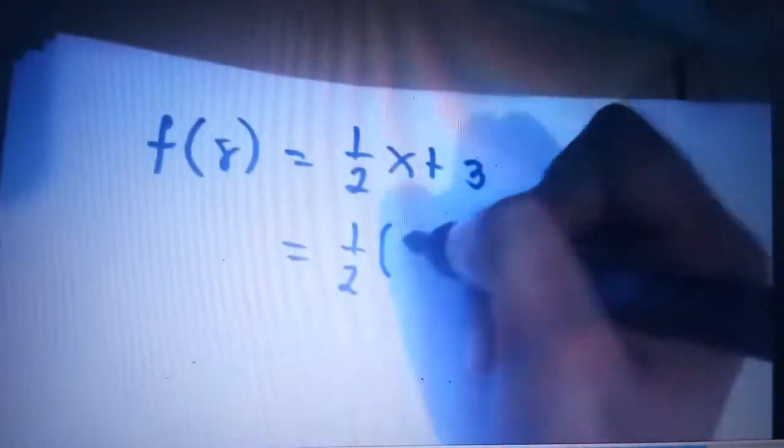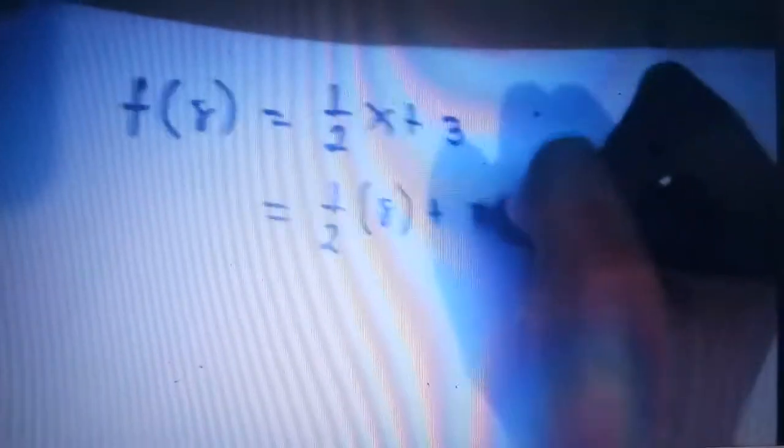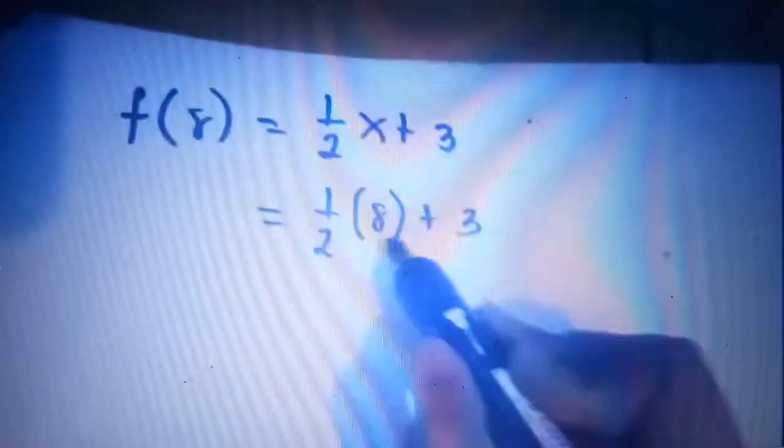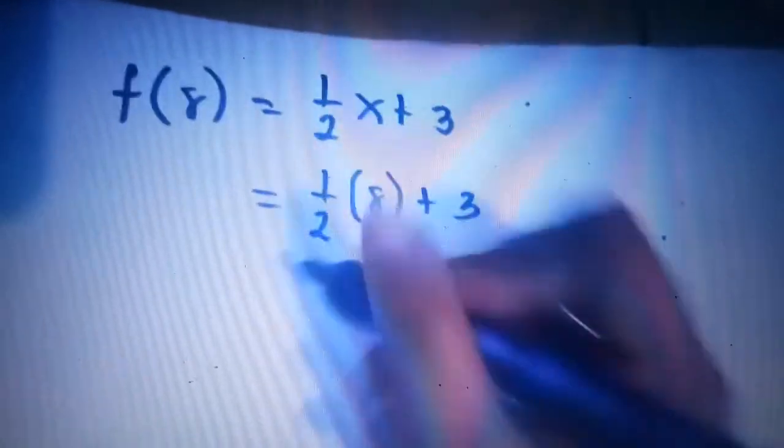Next, how about F of 8? We have one-half times 8 plus 3. 8 times 1 is 8, divided by 2 is 4, plus 3 equals 7. So F of 8 is equal to 7.